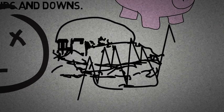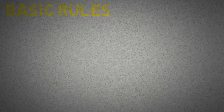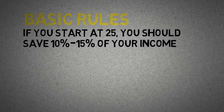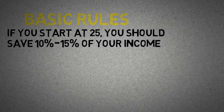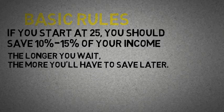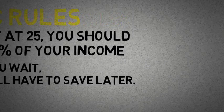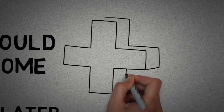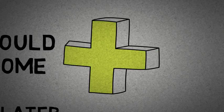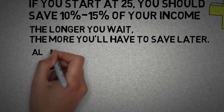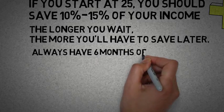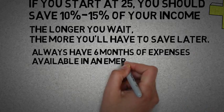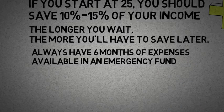So basic rules for a sound financial life: if you start saving at 25, you should save 10 to 15 percent of your income. The later you start, the more money you'll have to put away. But keep it as a rule to save a minimum of 10 to 15 percent. If you want to save more, that's even better. And always have six months of expenses available for emergencies.